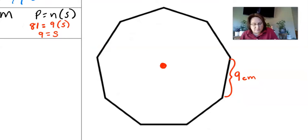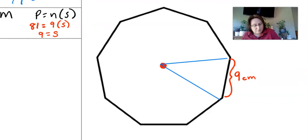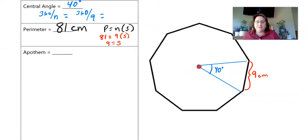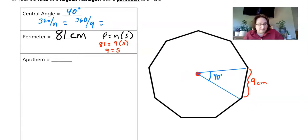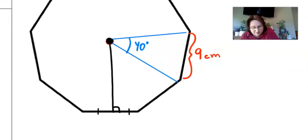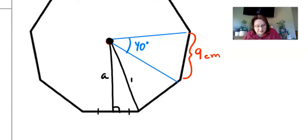I'm going to draw this a little differently than in the other video. Our central angle here is 40 degrees, and our whole side length is 9 centimeters. We're going to draw in the apothem, which cuts the central angle in half. The apothem goes from the center, is perpendicular to the side, bisects the side length, and also bisects the central angle.